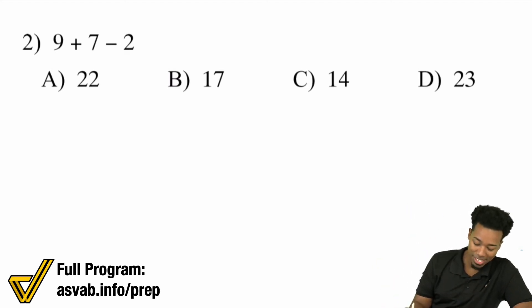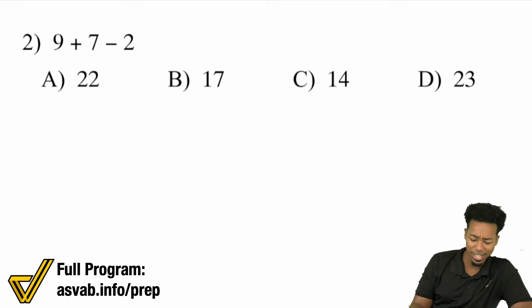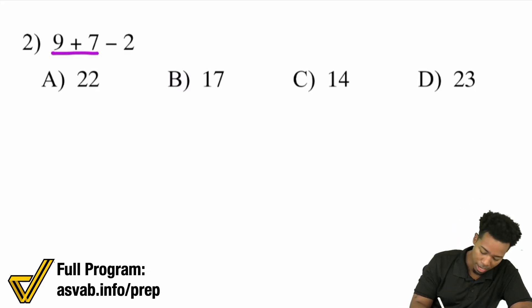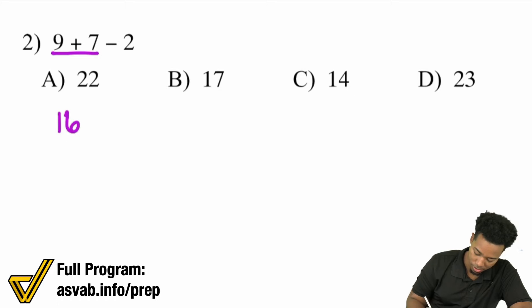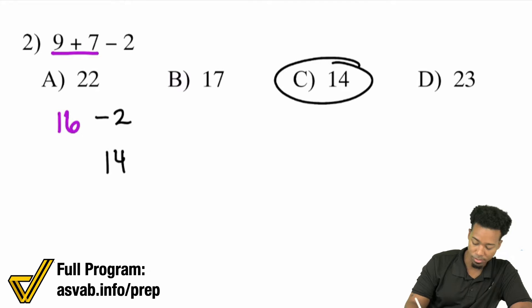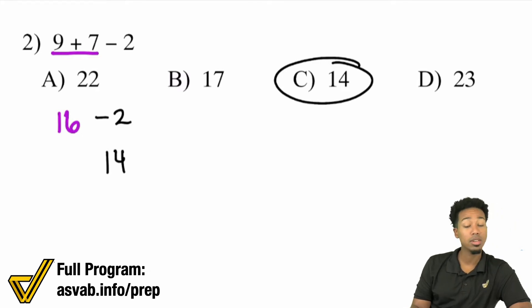Number 2: 9 plus 7 minus 2. Addition and subtraction — whichever one comes first. So we'll do 9 plus 7 first, which is 16. Then we have 16 minus 2, and that will be 14. That's going to be answer choice C.